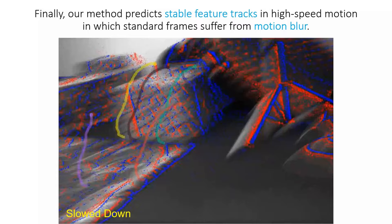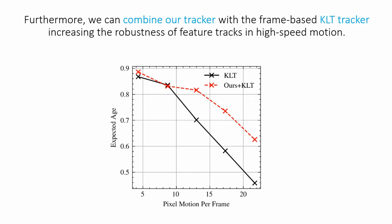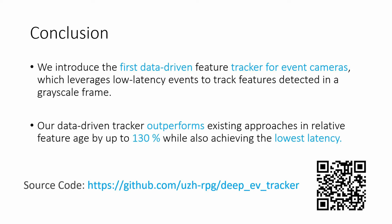Finally, we can combine our event-based tracker with a frame-based KLT tracker to predict stable tracks in challenging scenarios. In conclusion, we introduce the first data-driven feature tracker for event cameras, which leverages low-latency events to track features detected in a grayscale frame. As validated on two real-world datasets, our data-driven tracker outperforms existing approaches in relative feature age by up to 130%, while also achieving the lowest latency. Please check out our code on GitHub.